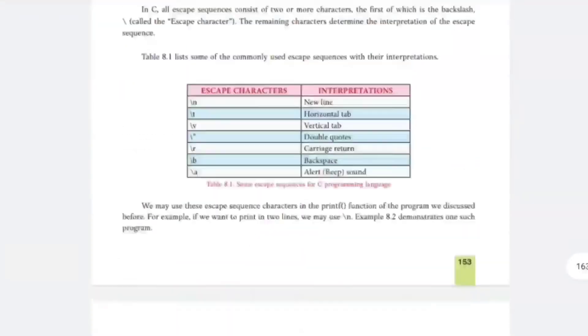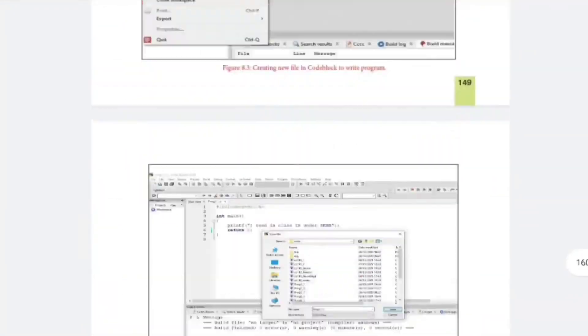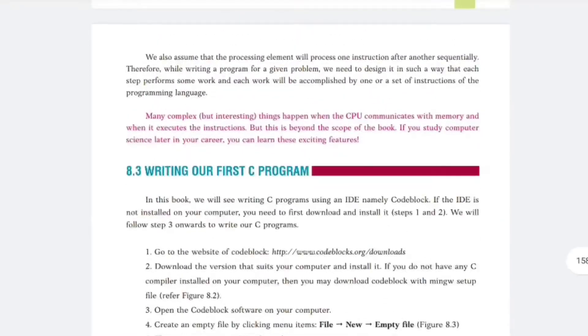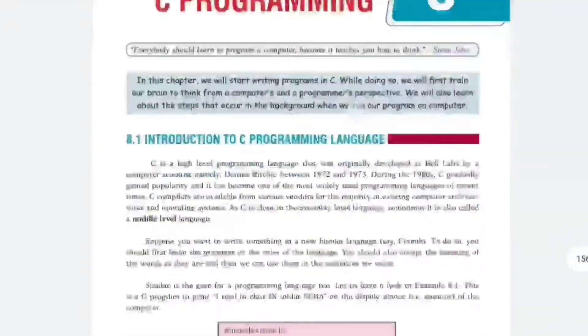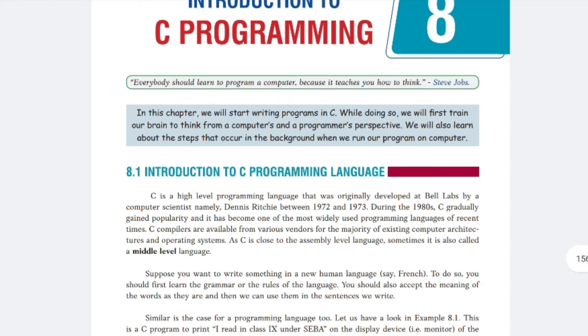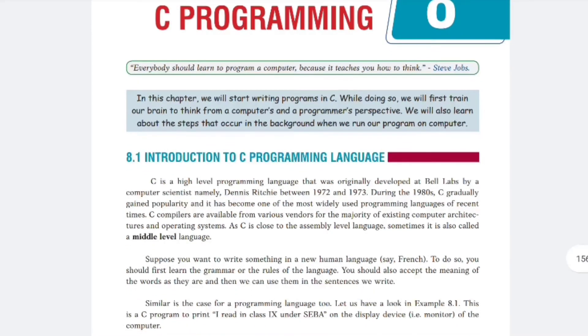Now we move to Chapter 8, which is Introduction to C Programming. The first question to learn is: who developed the C language? The answer is Dennis Ritchie. Dennis Ritchie developed C language — C came from B language. C is considered a middle-level language, though some also classify it as a high-level language.